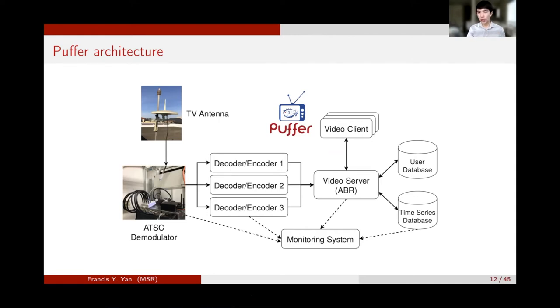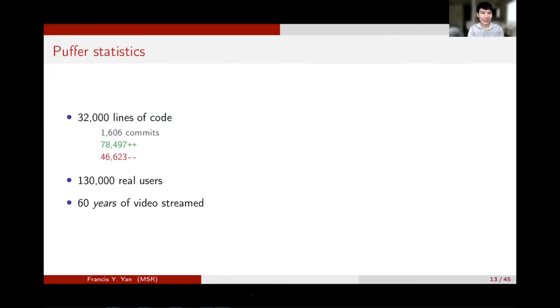Puffer's webpage might look simple, but you can think of it as a small YouTube TV built from scratch. It's a lot more challenging to support 130,000 users than just building a research prototype. This picture shows Puffer's architecture. We receive TV signals with an antenna, decode the signals, and encode video into different versions. We serve them using different ABR algorithms to our users. We've also got a monitoring system to monitor the health state of the system and send an alert to my phone if anything goes wrong. So I'm basically on call 24-7. Anytime there's a bug in the code, I have to fix it right now. Otherwise, I will get emails from our users.